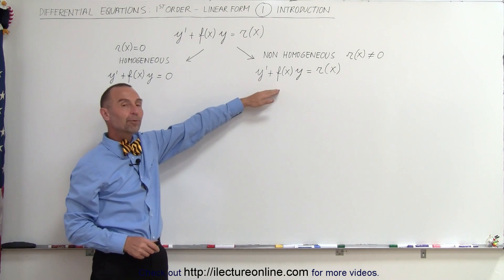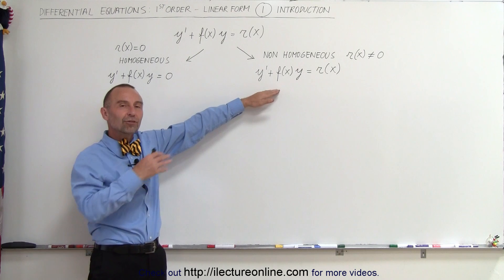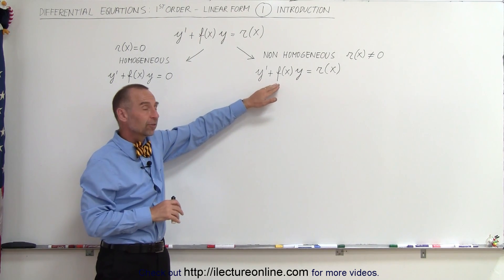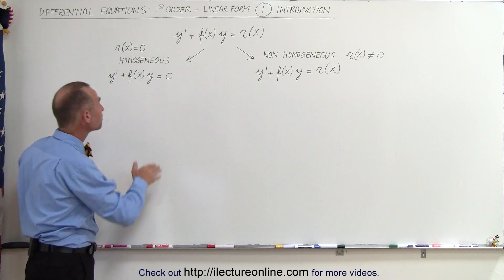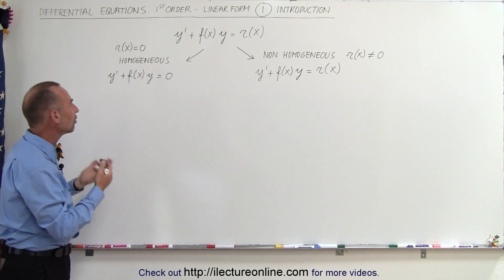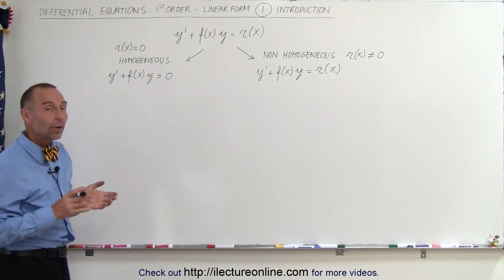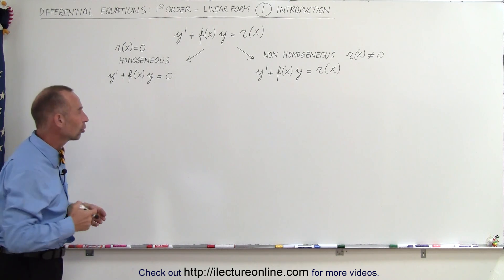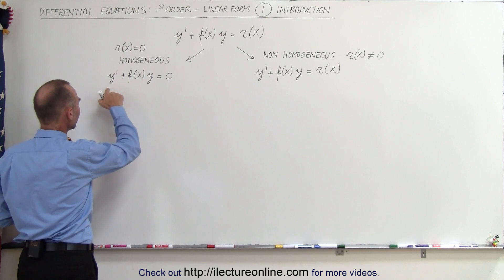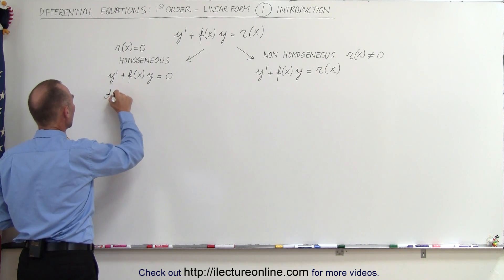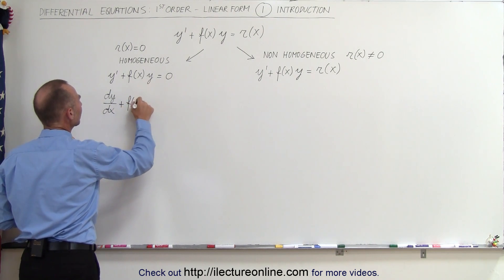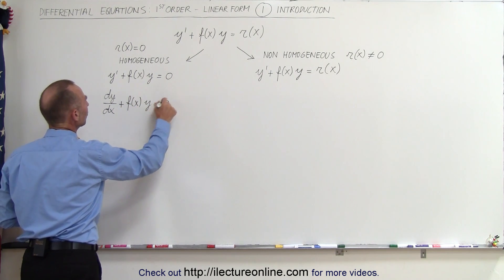This non-homogeneous form is a little more difficult to solve, and we'll show you some examples and techniques for that. The homogeneous form is rather easy to solve and has a simple solution. Let's go ahead and show what that solution looks like. We can write it as dy/dx plus some function of x times y equals zero.